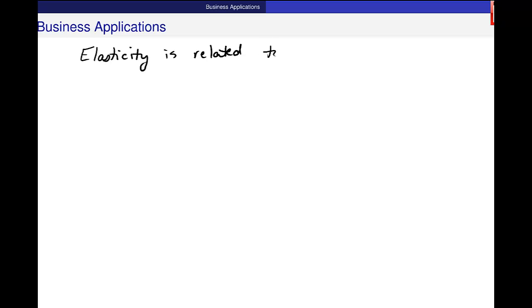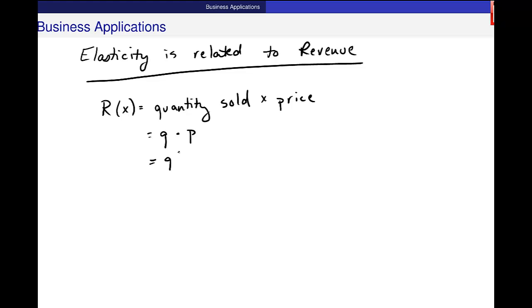When I think of revenue, r of x, it's this quantity sold, or demanded, times the price. In the variables we've been using, q times p. But we know that this q is really a function of p, that demand is a function of price.